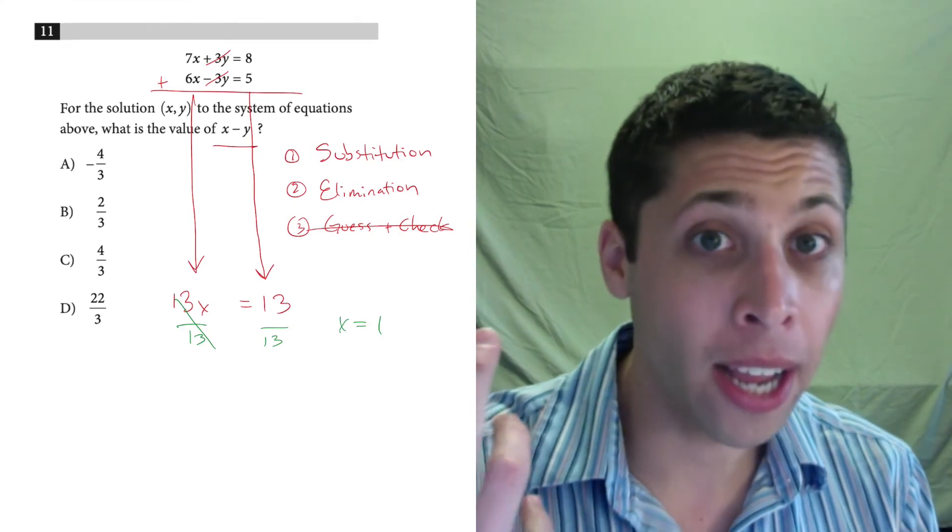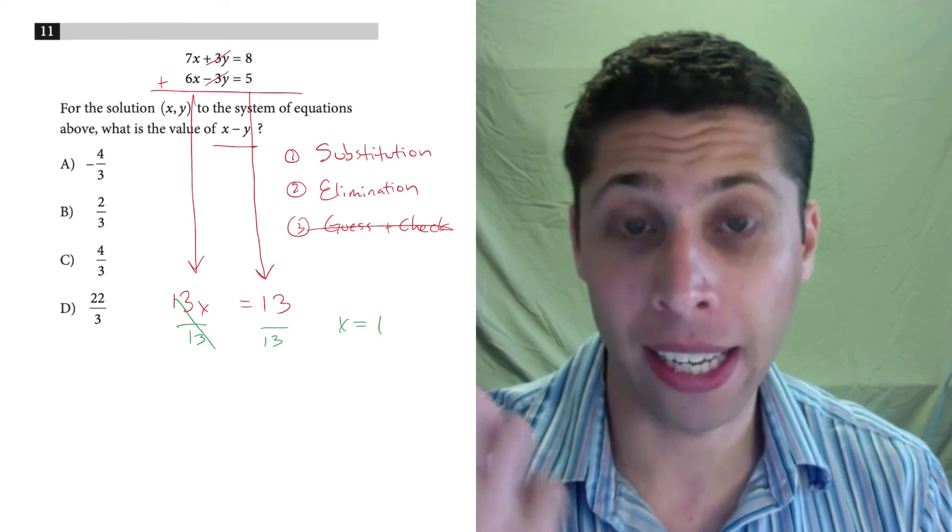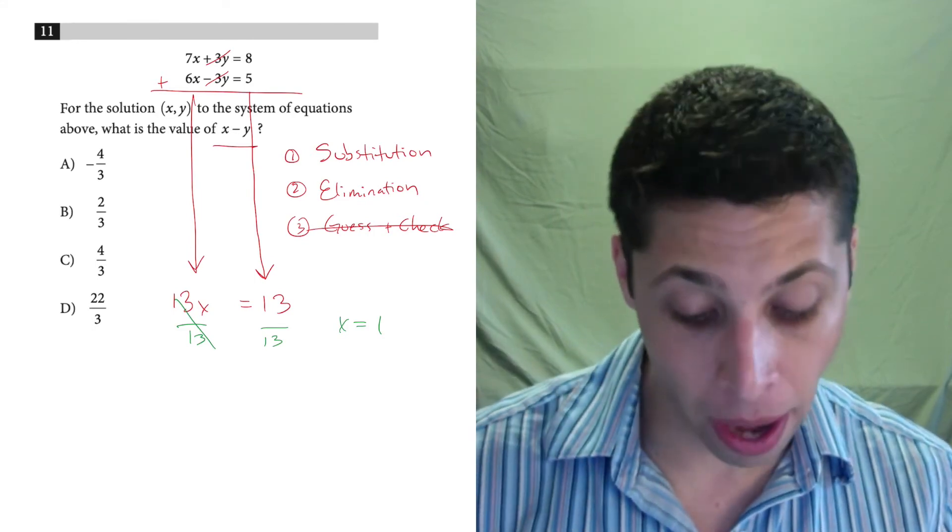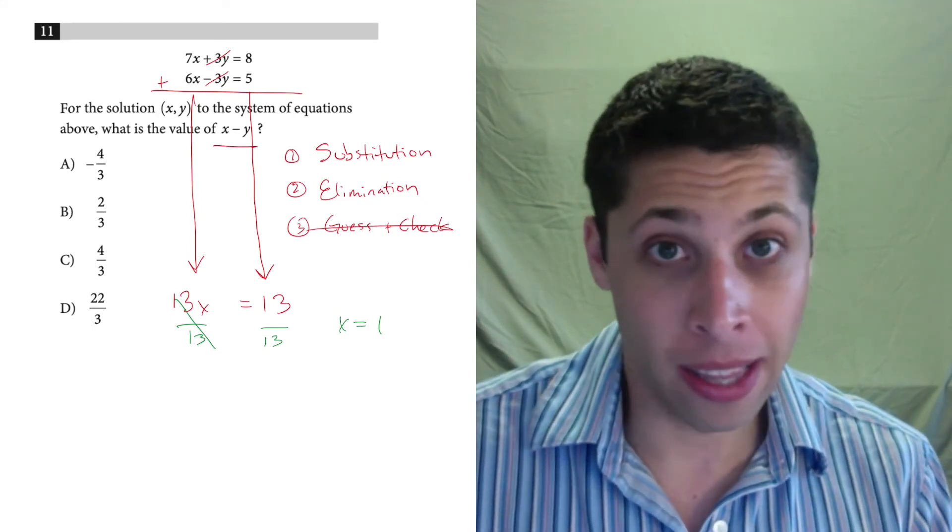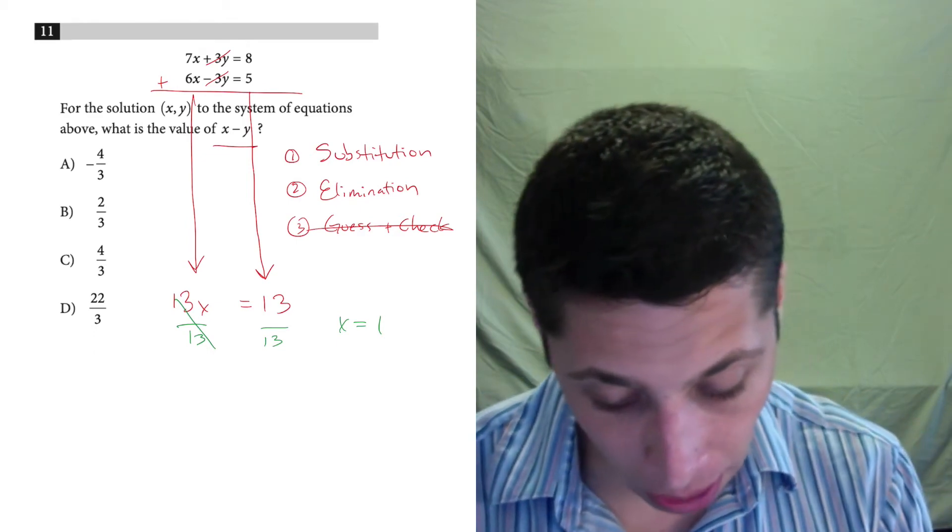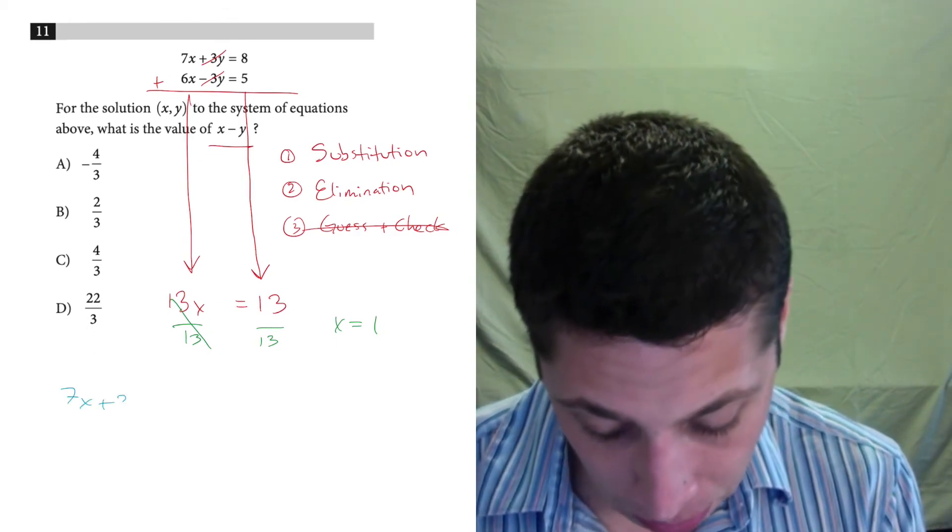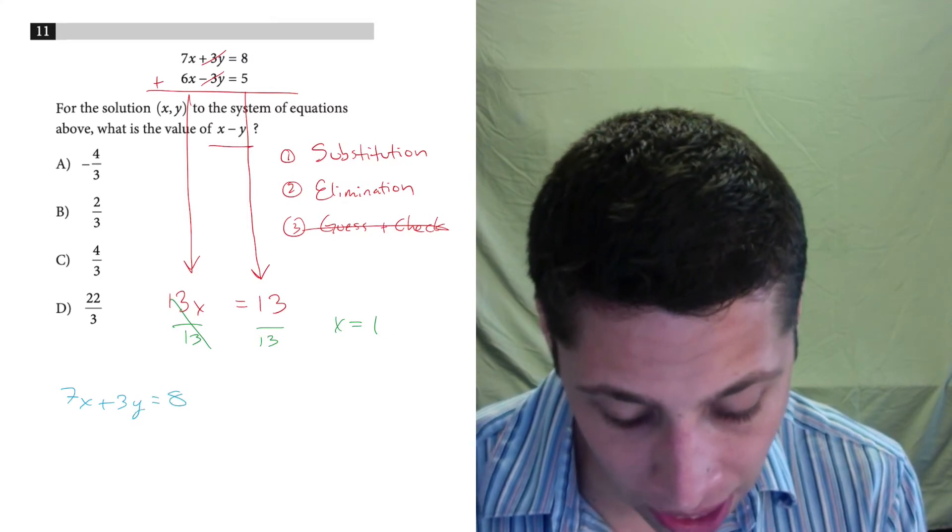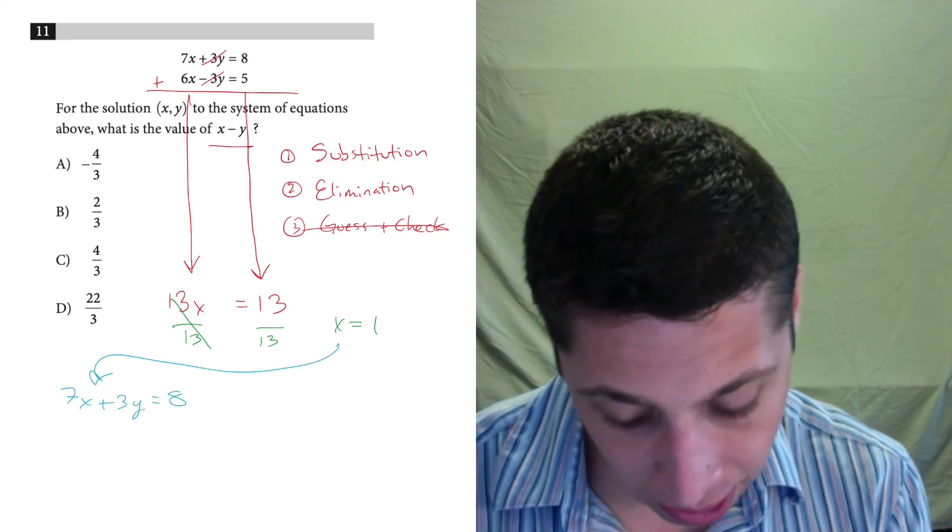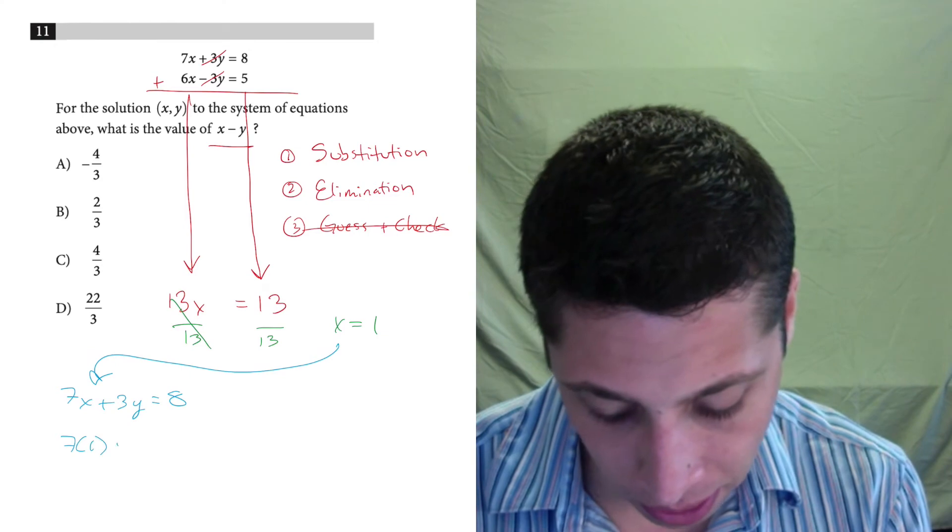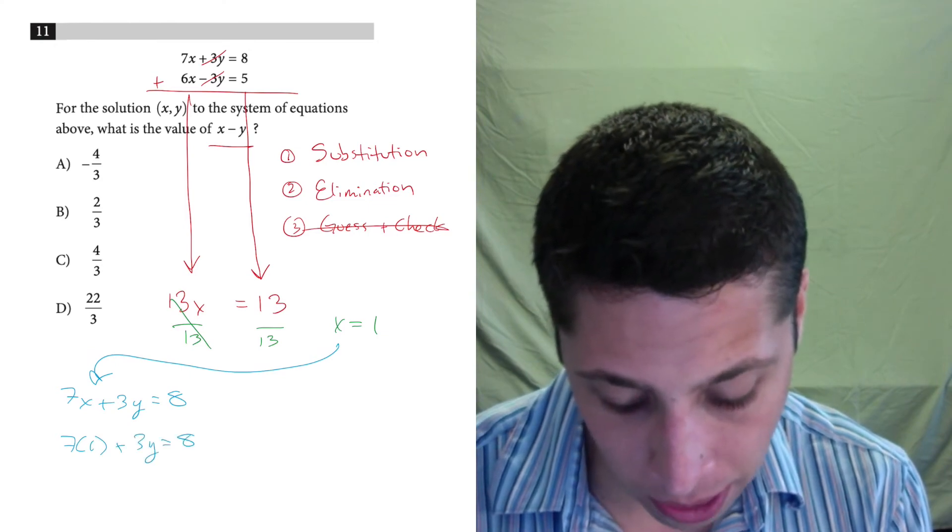Now, in order to find y, I need to take that x and plug it back into one of the equations. It really doesn't matter which one. In this case, I don't think either one is more efficient. I'm just going to do the first equation. So 7x plus 3y equals 8. We put that x in for x here. So 7 times 1 plus 3y equals 8.